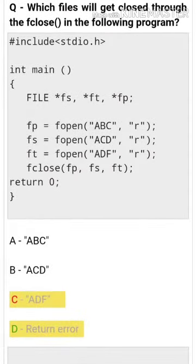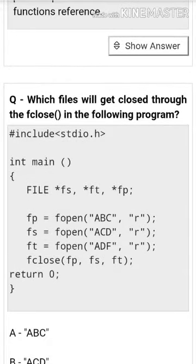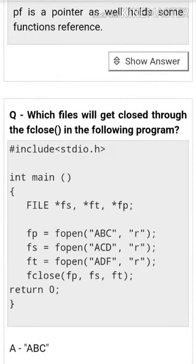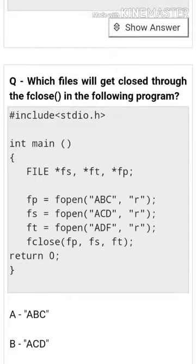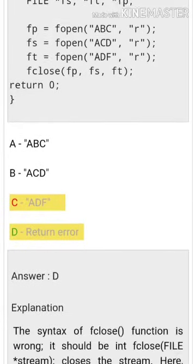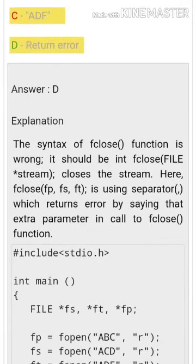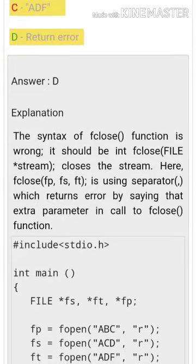Next question: which files will get closed through fclose in the following program? The answer is none. There's a syntax error. The correct syntax of fclose function is int fclose, and it should be file star stream to close the stream. Here fclose fp is using a separator which returns an error by saying extra parameter in call to fclose function.